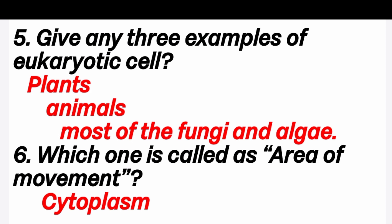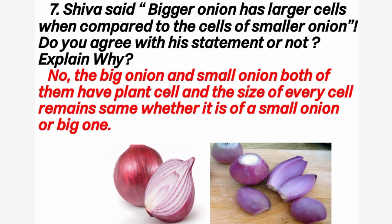Cytoplasm is a watery gel-like material in which cell parts move, so it is called the area of movement. Seventh question: Siva said bigger onion has larger cells when compared to the cells of smaller onion. Do you agree? No, I don't agree, because both big onion and small onion have plant cells and the size of every cell remains the same whether it is a small onion or a big onion.